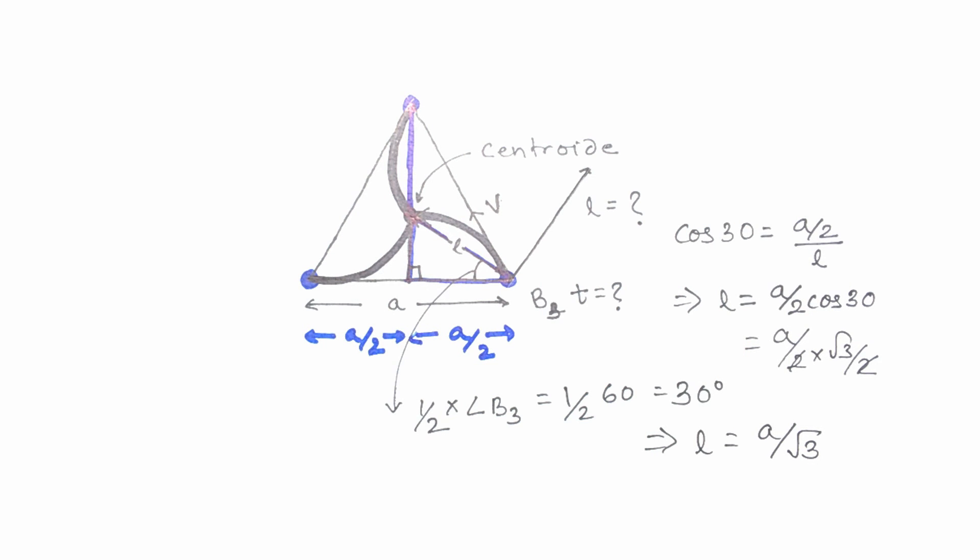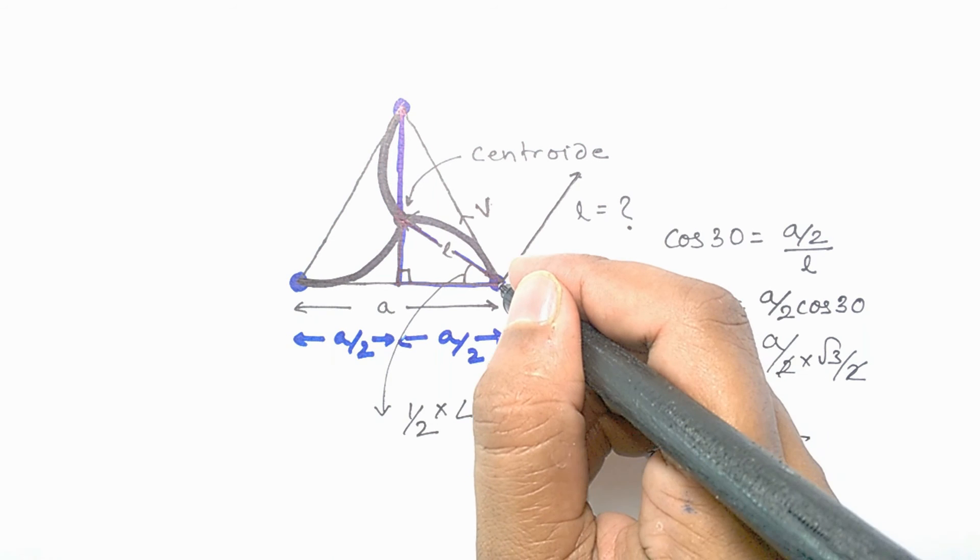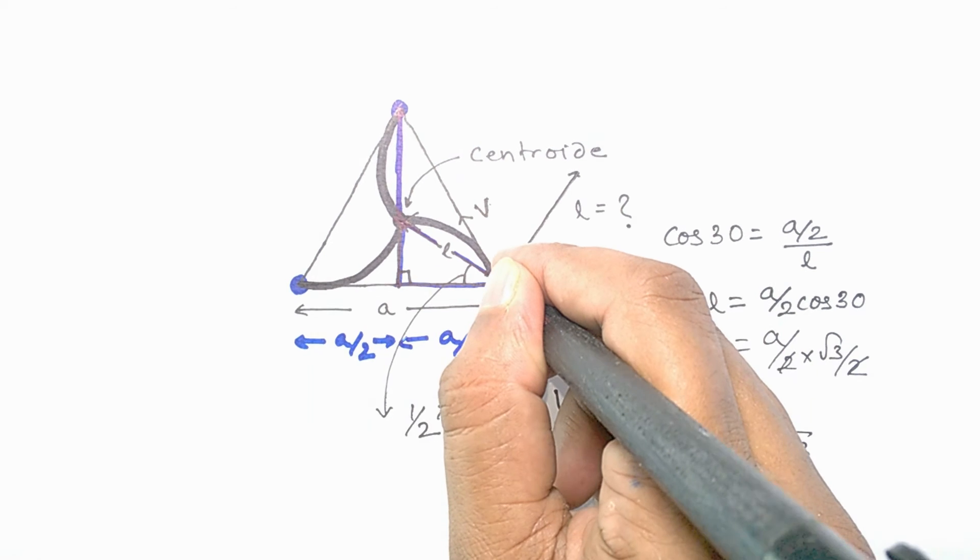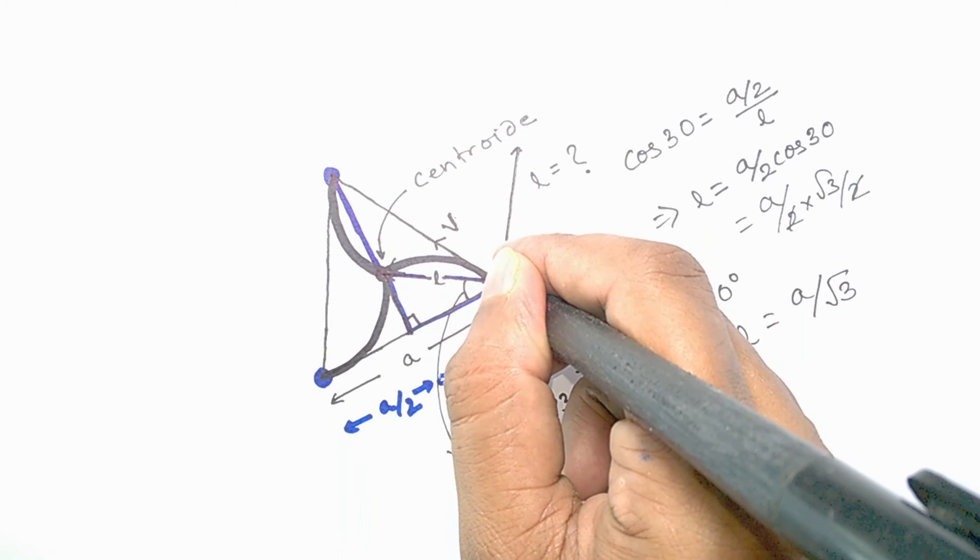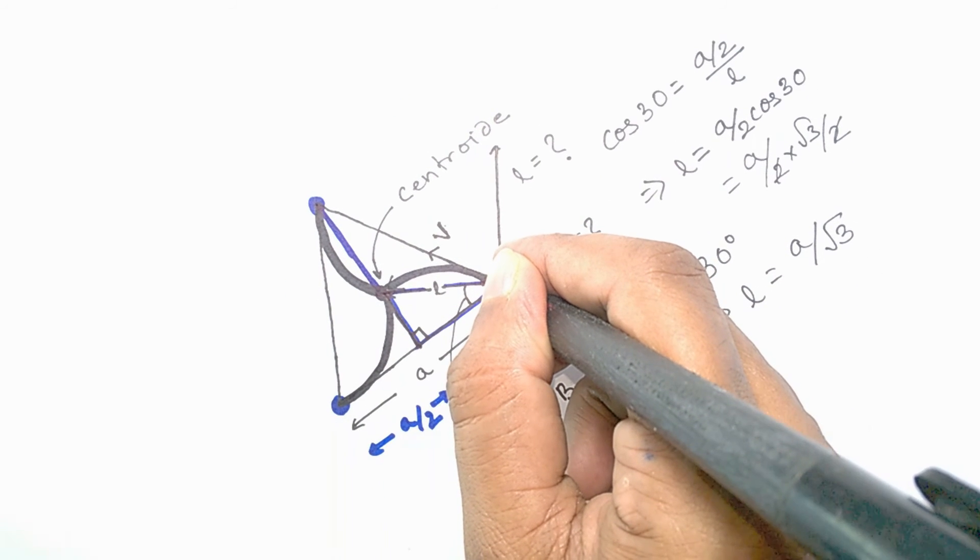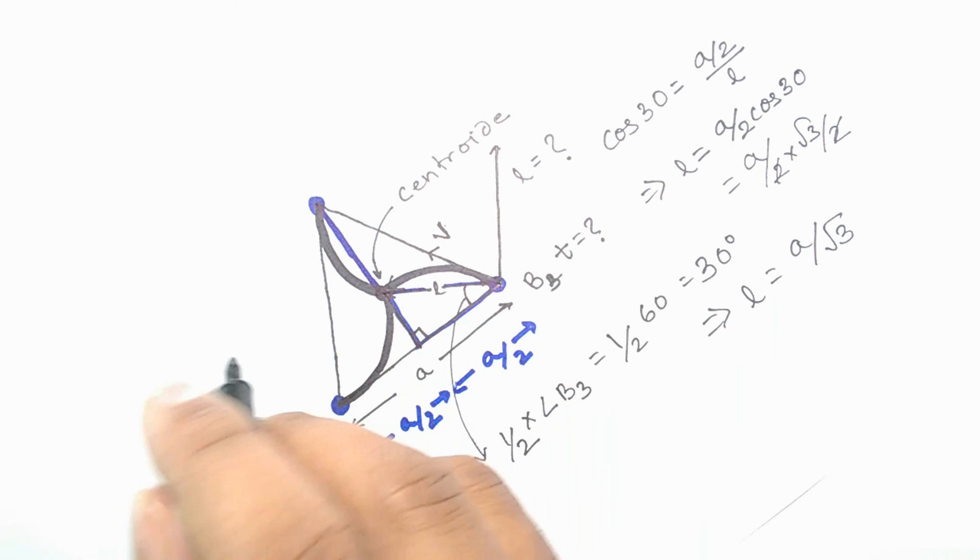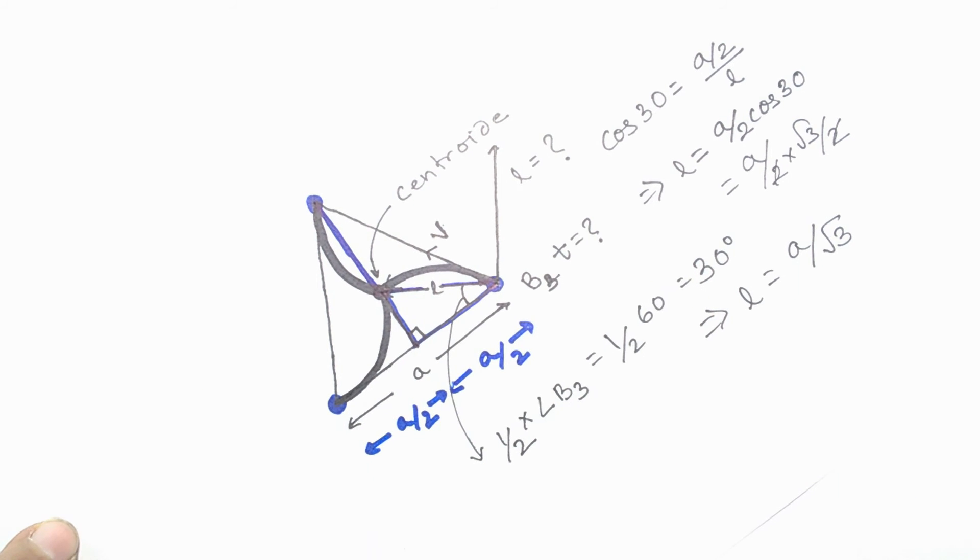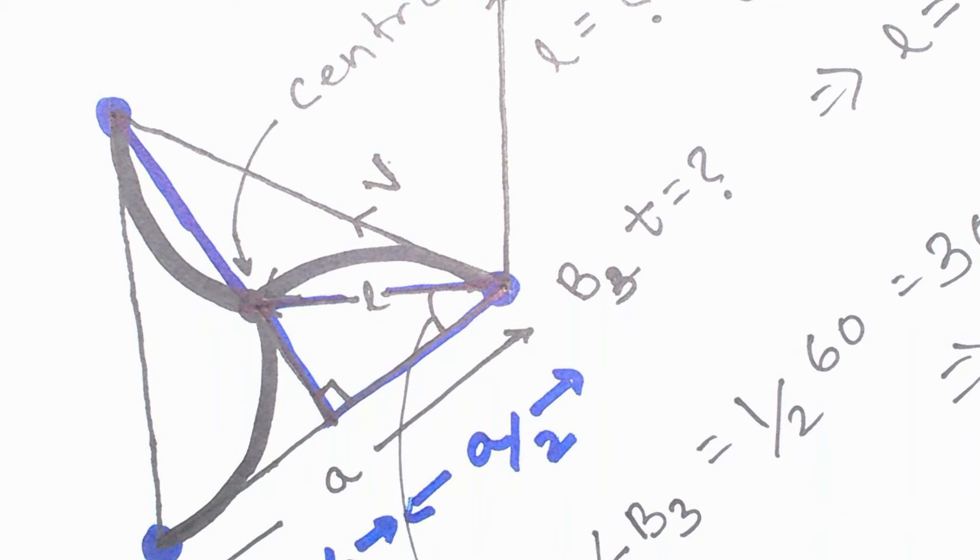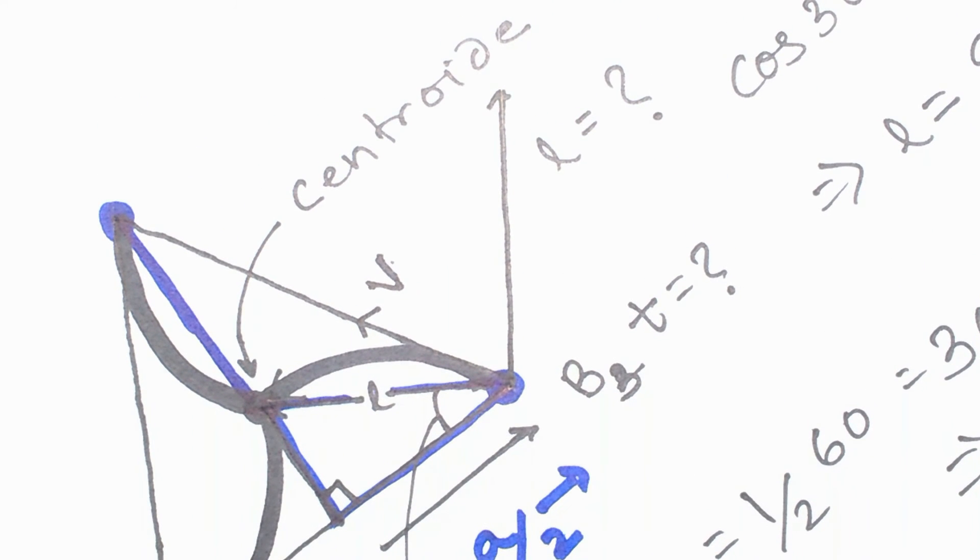So everything up to this time was mathematics and simple calculations. Here comes the main trick. What we will do here is that we will rotate the diagram from the third vertex, taking it as the axis of rotation anti-clockwise by 30 degrees.